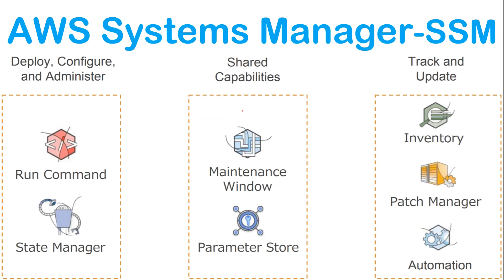This is where Amazon Systems Manager comes in to help you and make your life easy. Amazon has categorized the services into three different capability groups. In the first group — deploy, configure, and administer — you have two features. One is called Run Command, which helps you run a single command, multiple commands, or a series of commands across a large number of instances.